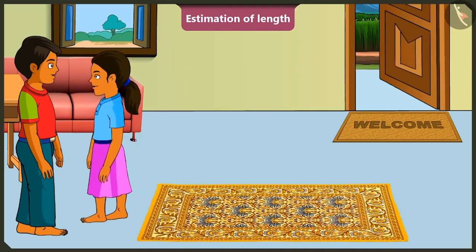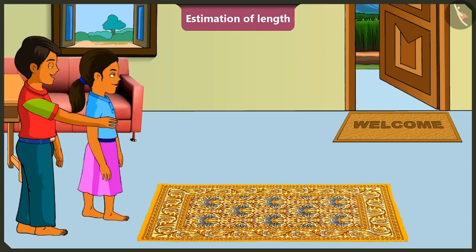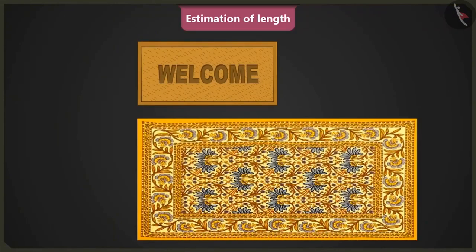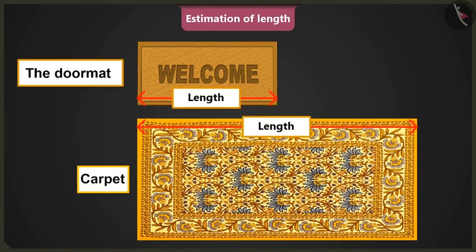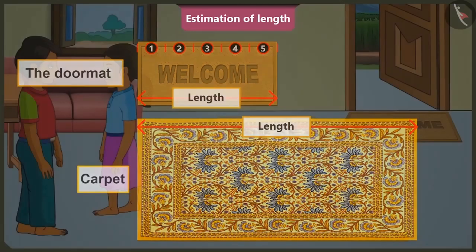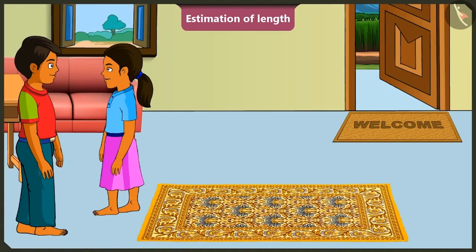Okay, Mintu, now tell me what will be the length of the door mat that is placed there? If the length of the door mat placed near the door is half that of this carpet, then the approximate length of the mat should be equal to five foot spans. Rightly said, Mintu.